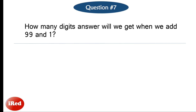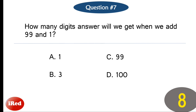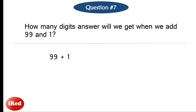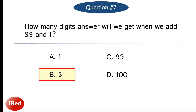Question 7: How many digits will the answer have when we add 99 and 1? The sum of 99 and 1 is equal to 100. However, the question asks how many digits is the answer. 100 has 3 digits. The correct answer for number 7 is letter B, 3.